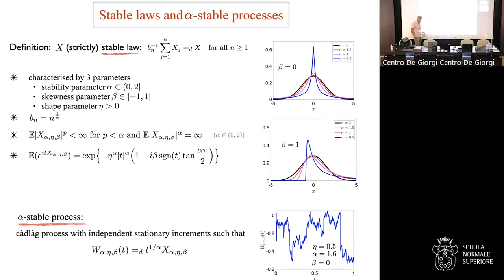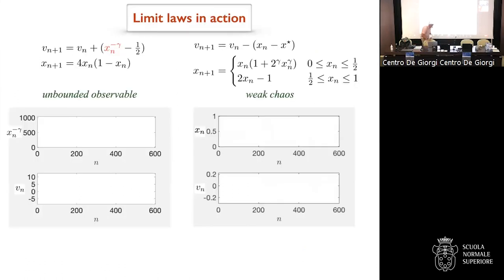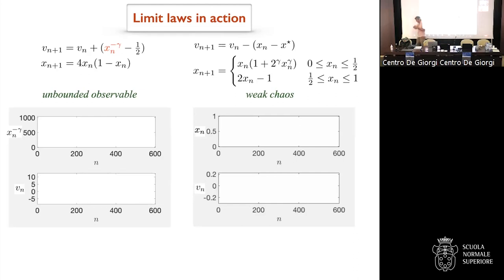I want to present some dynamical mechanisms for generating alpha-stable processes — entirely from deterministic dynamics. The central limit theorem breaks down for these random variables, and how can that happen deterministically? The variance in the CLT is given by the Green-Kubo formula: the variance plus the integral over the autocorrelation function. There are two ways it can break down: your observable is not in L2, or the autocorrelation function is non-summable.